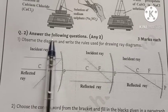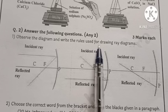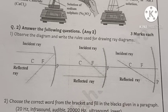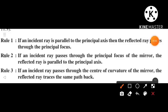Question number 2: answer the following questions, any two, 3 marks. Observe the diagram and write the rules used for drawing ray diagrams. First rule: if the incident ray is parallel to the principal axis, then the reflected ray passes through the principal focus. From second figure, rule second: if the incident ray passes through the principal focus of the mirror, the reflected ray is parallel to the principal axis.